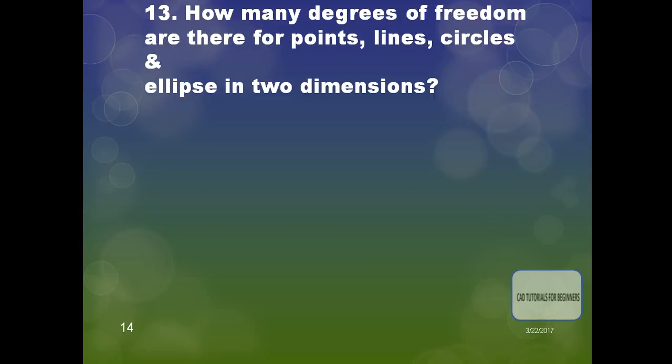The next question is: how many degrees of freedom are there for points, lines, circles, and ellipses in two dimensions? There are two degrees of freedom for points, three degrees of freedom for lines and circles, and ellipses have five degrees of freedom.